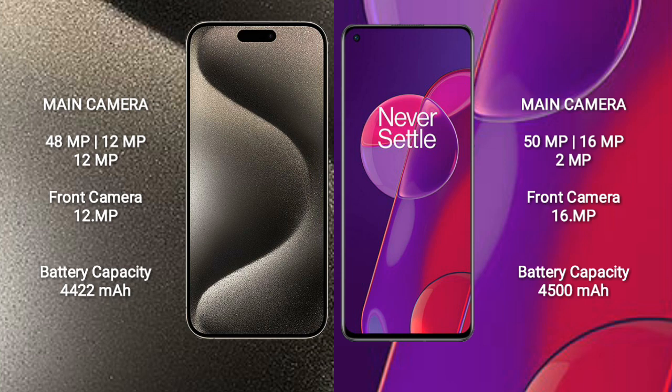iPhone 15 Pro Max has a 4422mAh battery with 36W fast charging support. OnePlus 9RT has a 4500mAh battery with 65W fast charging support.